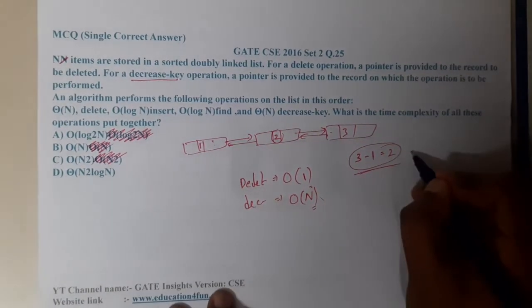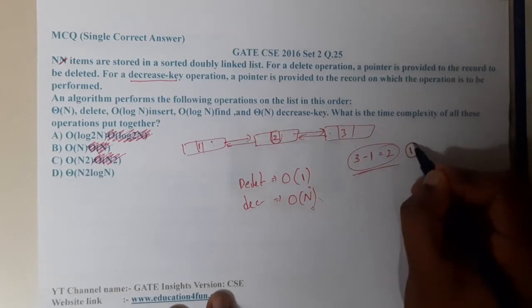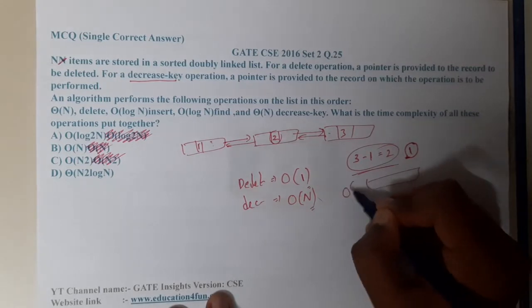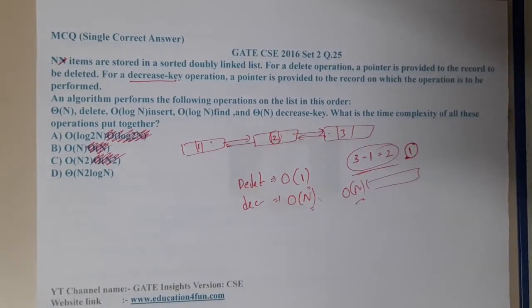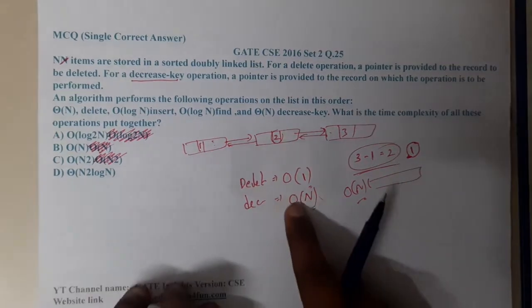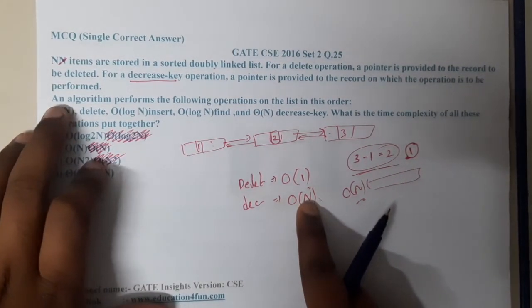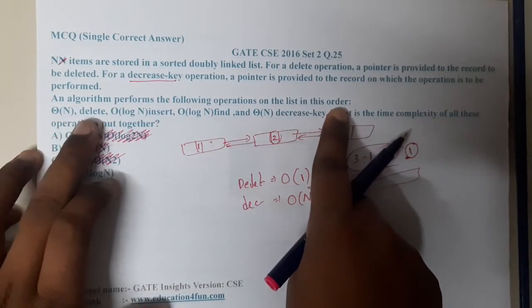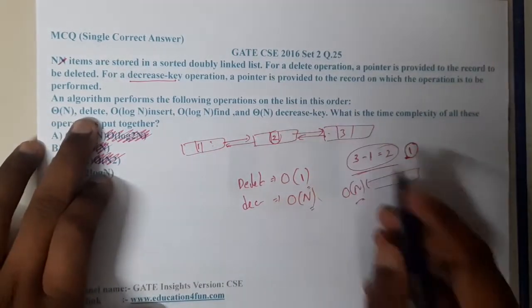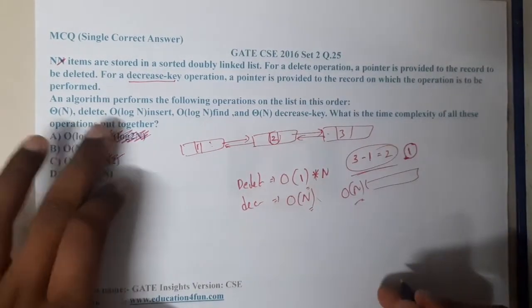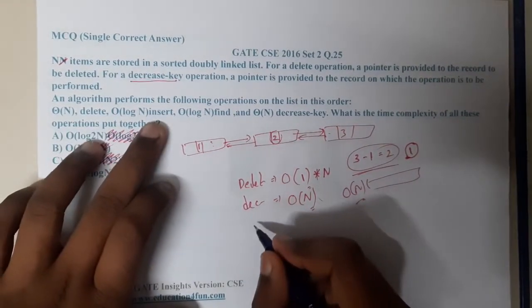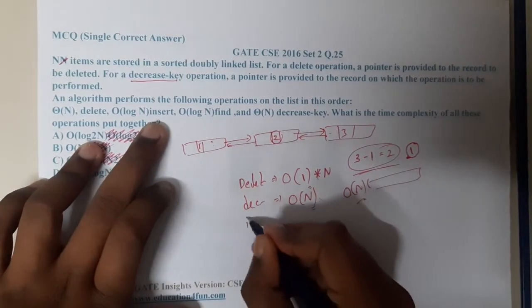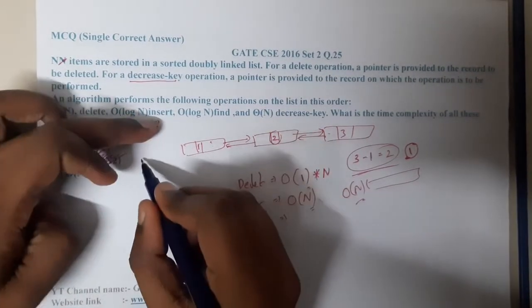Once you decrement, the decrement itself takes only a single step, but after decreasing you need to re-sort the element. So the worst case is O(n) for sorting. After that, the question says an algorithm performs the following operations on the list: n delete operations, and log n insertion operations. So what is the cost of insertion?